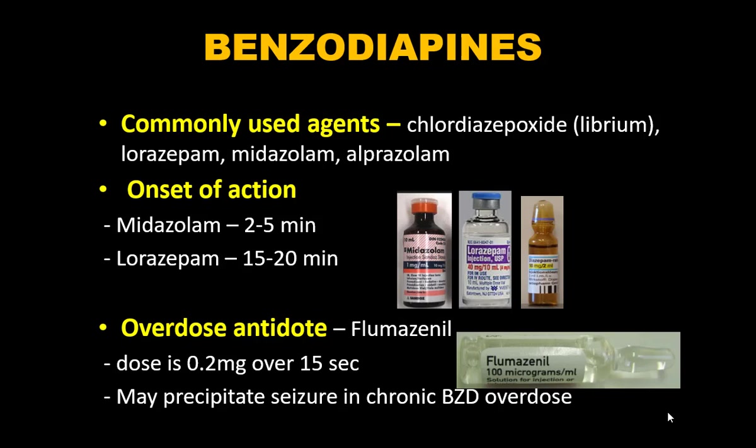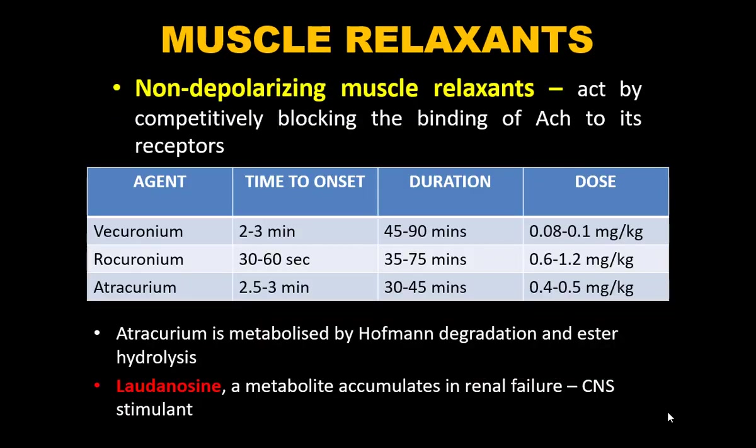The current choice for alcohol withdrawal treatment is lorazepam rather than chlordiazepoxide. Onset of action: midazolam is 2–5 minutes; lorazepam is 15–20 minutes. In cases of benzodiazepine overdose, the antidote is flumazenil — 0.2 mg over 15 seconds. Flumazenil is very short-acting, so for long-acting benzodiazepine overdose, it may need to be given as an infusion. However, it is not available in India.